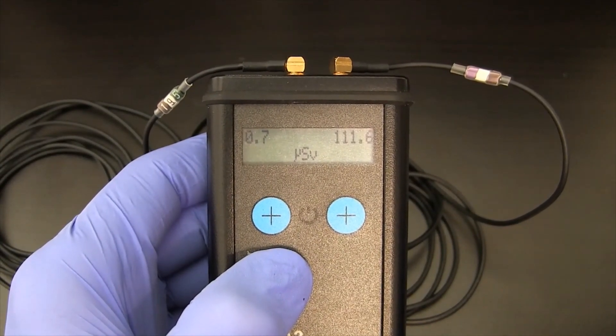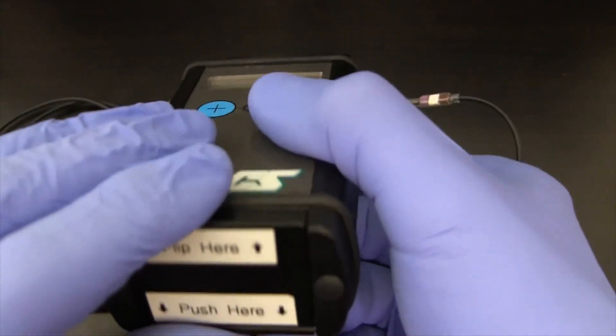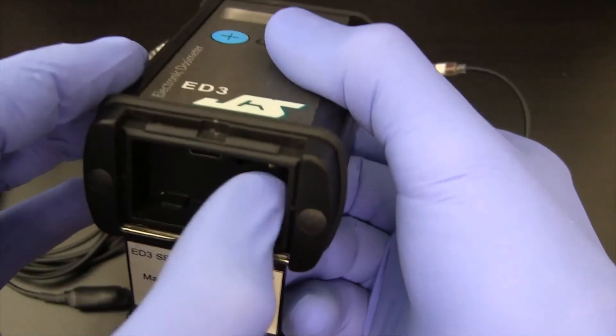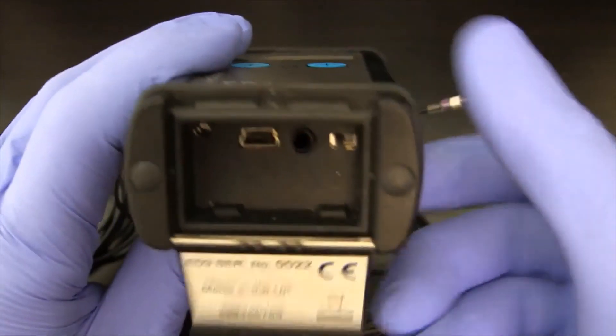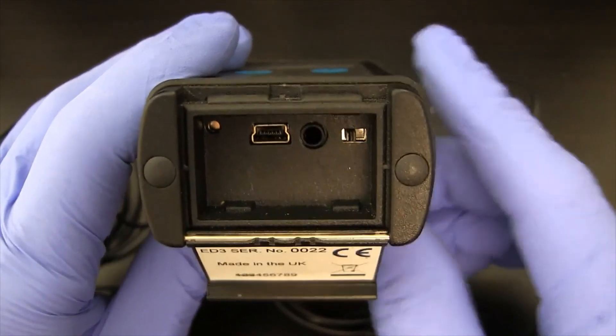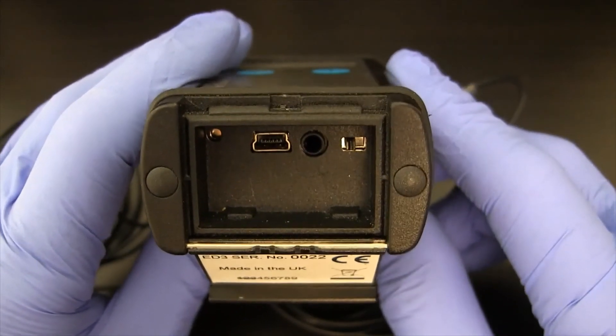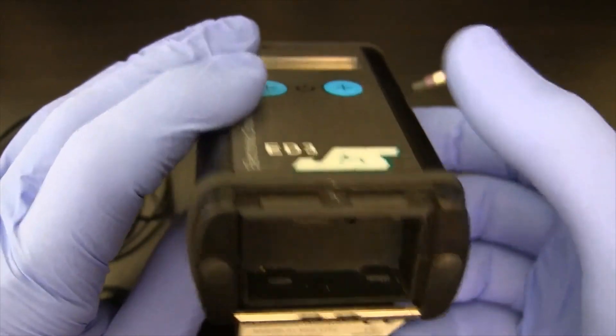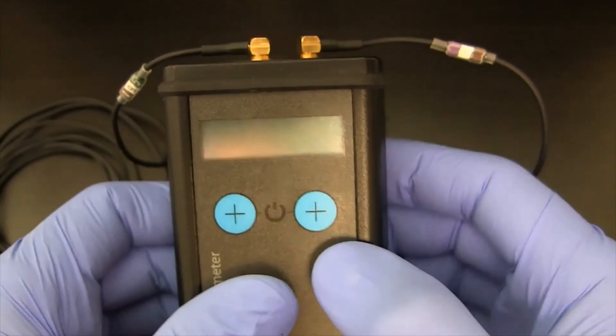Once we're finished with the unit, it's just a reverse process of opening the lid on the bottom and turning off the system. At this point, you could connect a USB cable and then download the data to the PC.